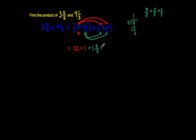Now I'm going to put that together with two-fifths times one-third. Two times one is two, and five times three is fifteen, so we have two-fifteenths.